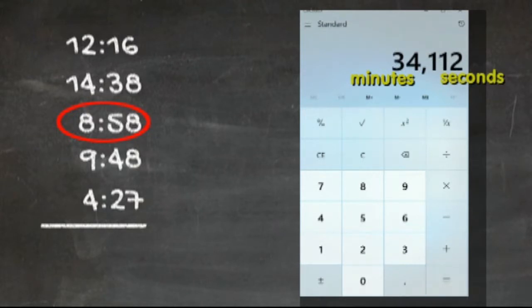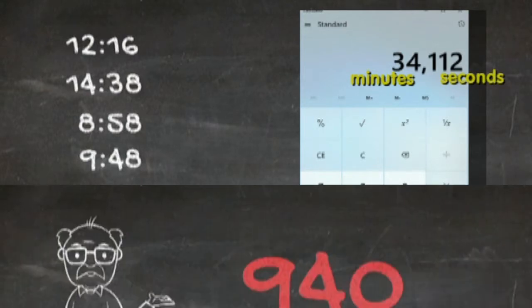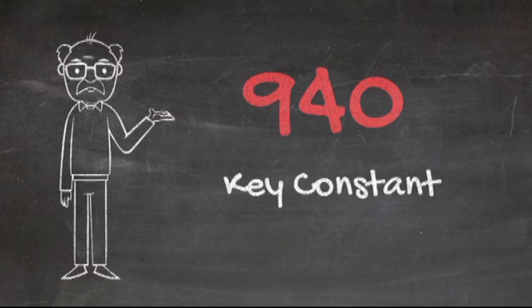We now have 34 minutes and awkwardly 112 seconds. Hey, wasn't it neat that the middle zero kept that nasty one from being added to the minutes? I told you there was another function for the zero. What we do now is to convert those 112 seconds into minutes and seconds. Thankfully we have a calculator to help us do just that. Now is the time to recall the key constant I started off with.